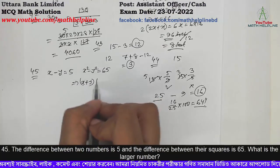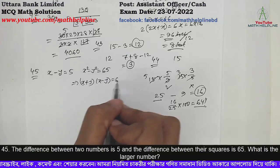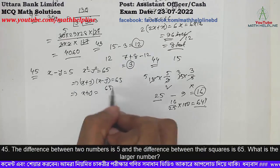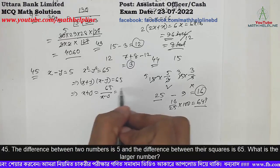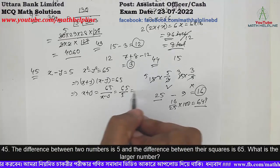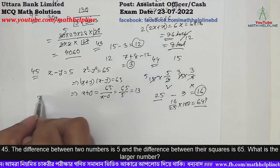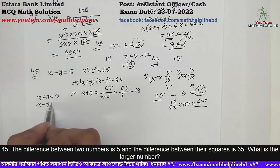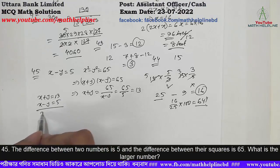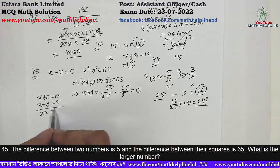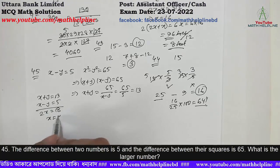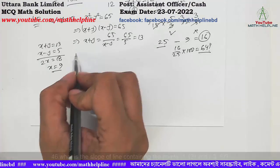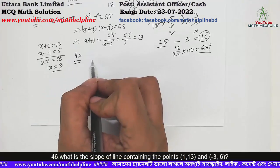We use (x plus y)(x minus y) equals 65. So x plus y equals 65 and x minus y equals 5. Therefore x plus y equals 13, x minus y equals 5. Solving: 2x equals 18, x equals 9, and y equals 9. Problem number 46.